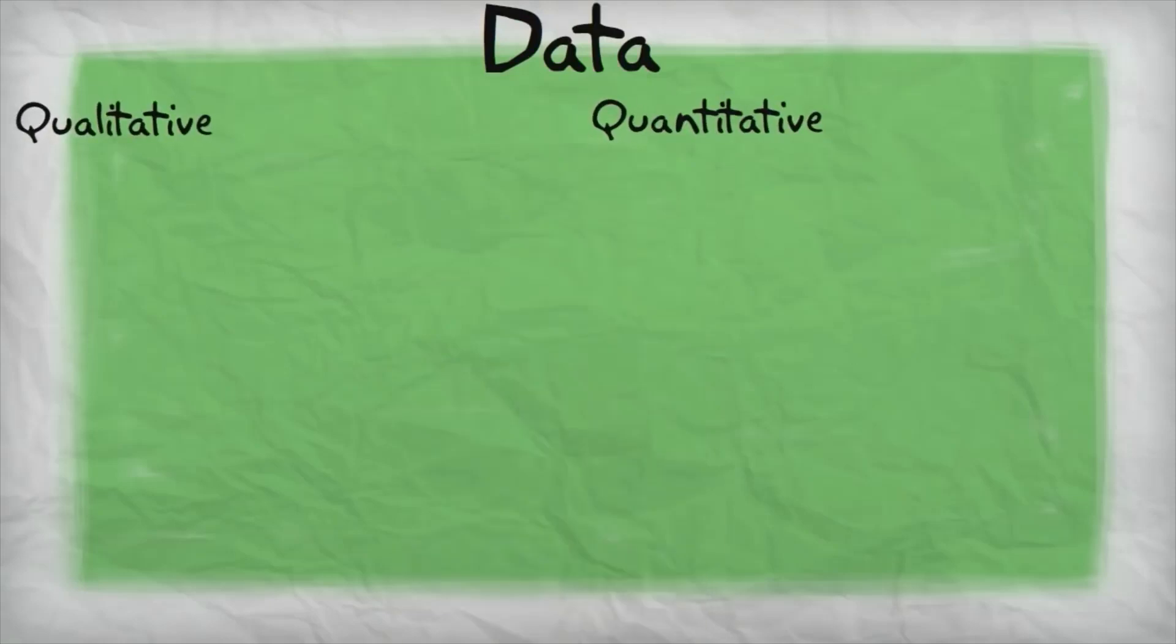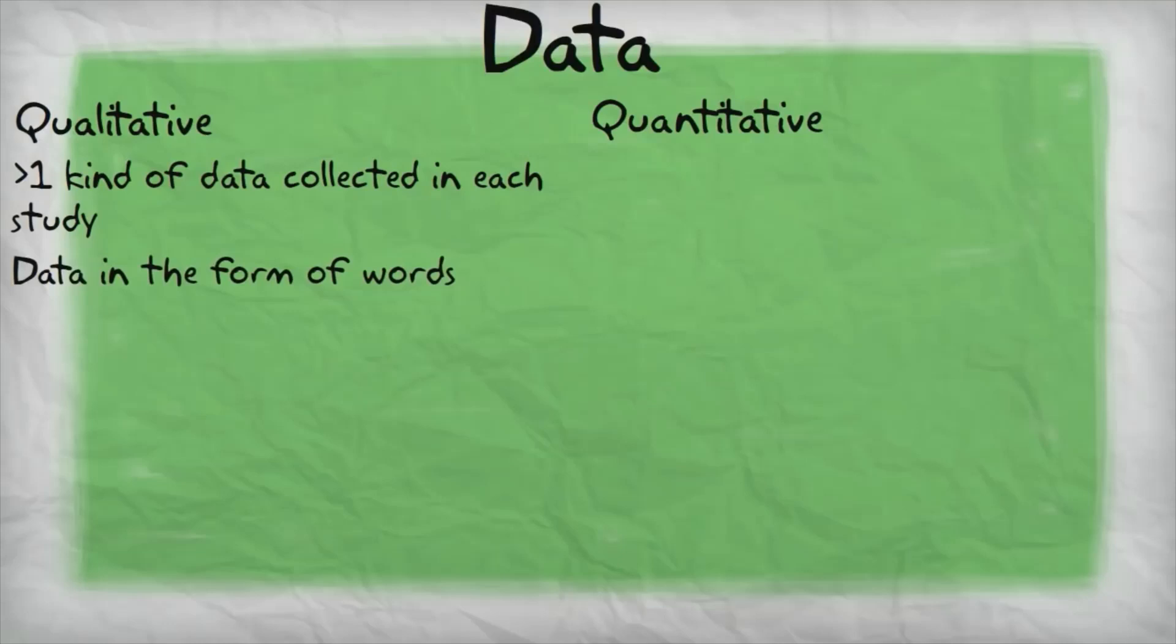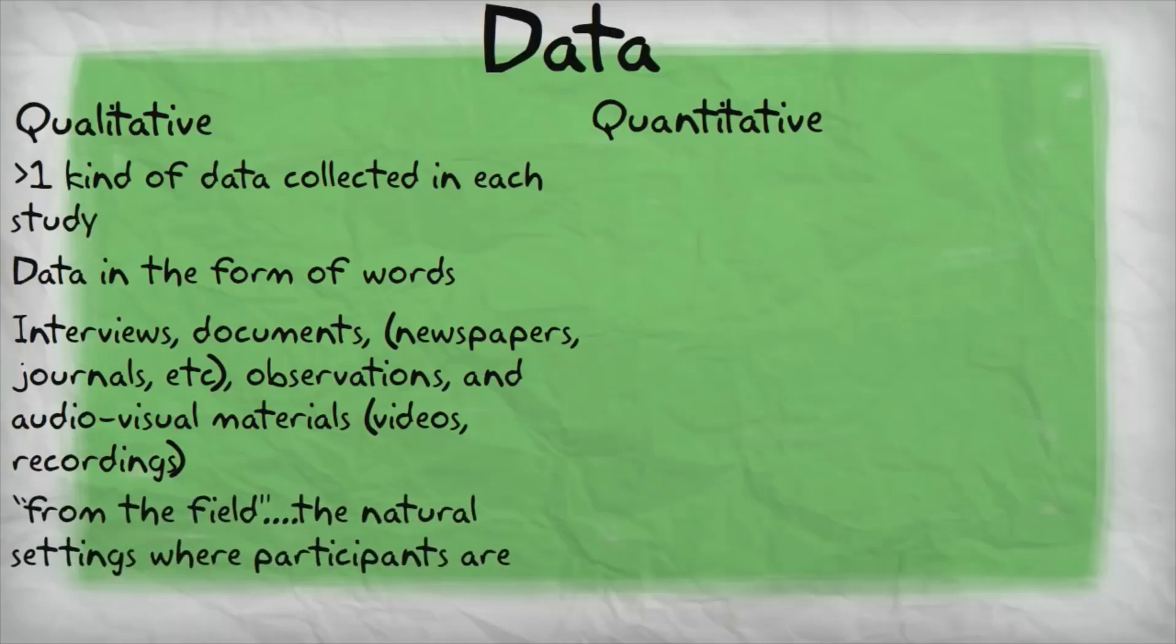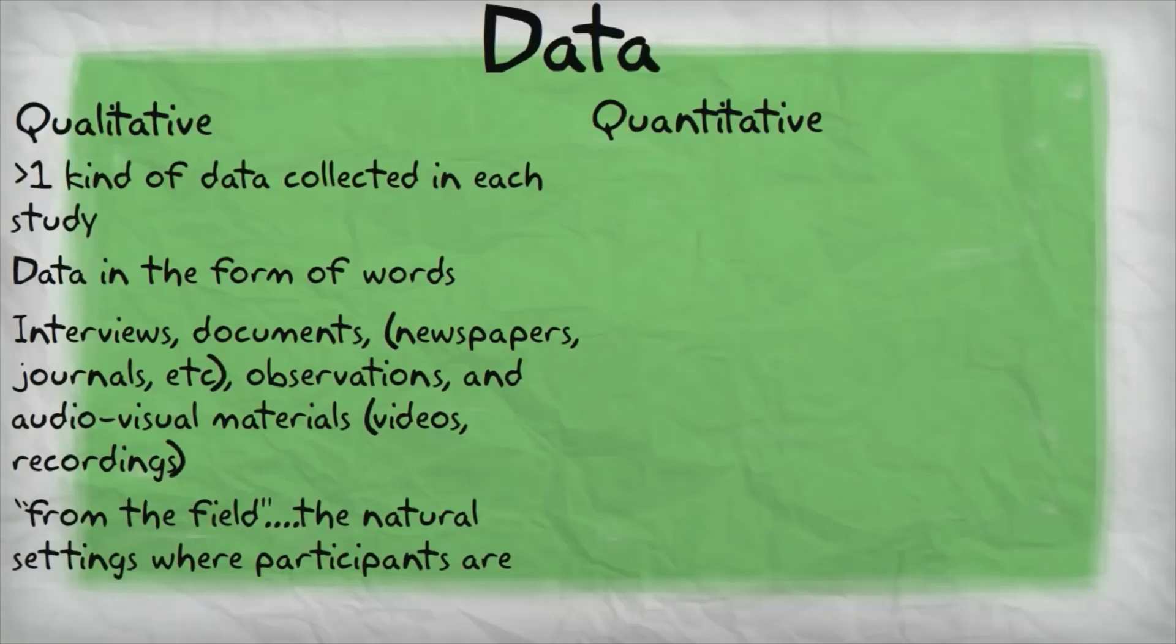Typically, in qualitative research, researchers collect more than one type of data in order to get a better, more holistic picture of what's going on in the field. The data used in qualitative research is almost always in what people say or their words. This data usually comes from interviews, documents like newspapers or journals, observations and audiovisual materials like videos or audio recordings. Researchers usually obtain multiple types of these kinds of data in order to answer a research question. All of this data comes from the field, which means the natural settings where participants are. In qualitative research, researchers go into the field and spend a lot of time there interviewing and observing the participants in their environments.